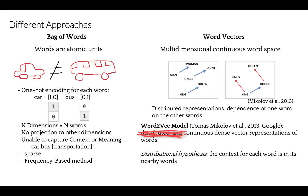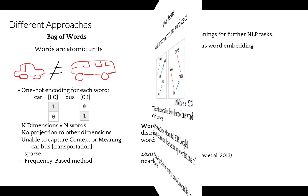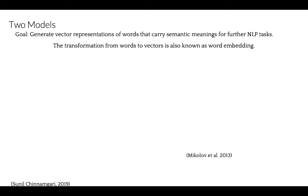Word2Vec is one such model, developed in 2013 by Thomas Mikolov at Google as a response to making neural network-based training of embeddings more efficient. Since then, it has become a de facto standard for developing pre-trained word embeddings. Word2Vec is based on the distributional hypothesis, where the context for each word is its nearby words. The goal is to generate vector representations of words that carry semantic meaning for further NLP tasks, such as classification — and this transformation from words to vectors is known as word embedding.